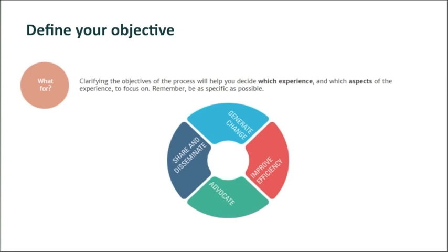We start an experience capitalization process in order to collect lessons or to improve the way that we work. As a long-term objective, we want better interventions and to improve the things that we are doing. But we might have a shorter-term objective — for example, as part of the monitoring process, to improve very specific activities. Or we may be more interested in sharing information, in showing what we have been doing. And linked to this, we can also say that we are interested in advocating — in encouraging people to work in a certain way. So the starting point has to be defining, with your whole group of participants, what exactly you want to achieve.